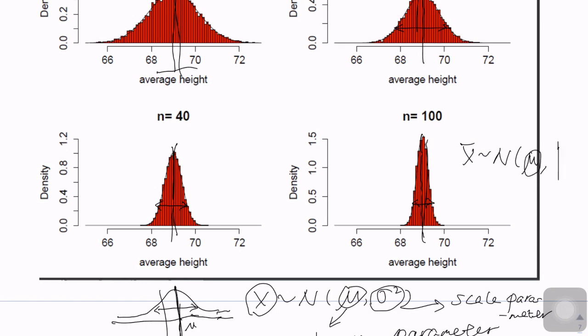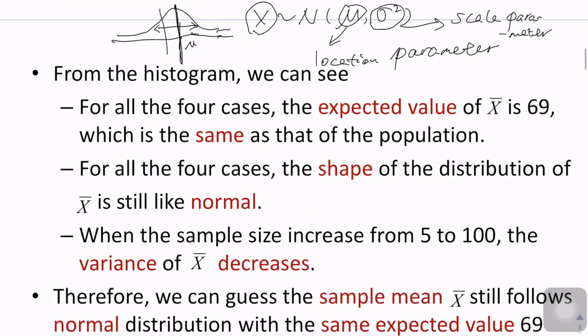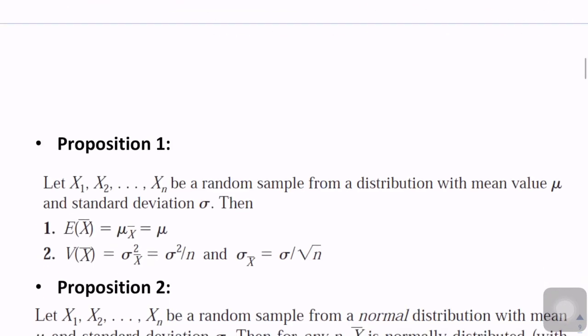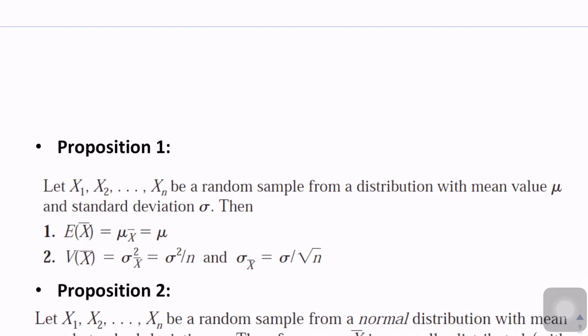We also guess that the corresponding variance will change. Specifically, when x_1, x_2, ..., x_n are random samples from a distribution with mean mu and standard deviation sigma, we conclude that the expectation of x-bar equals mu, and the variance of x-bar equals sigma squared divided by n — so the standard deviation of x-bar is sigma divided by the square root of n.